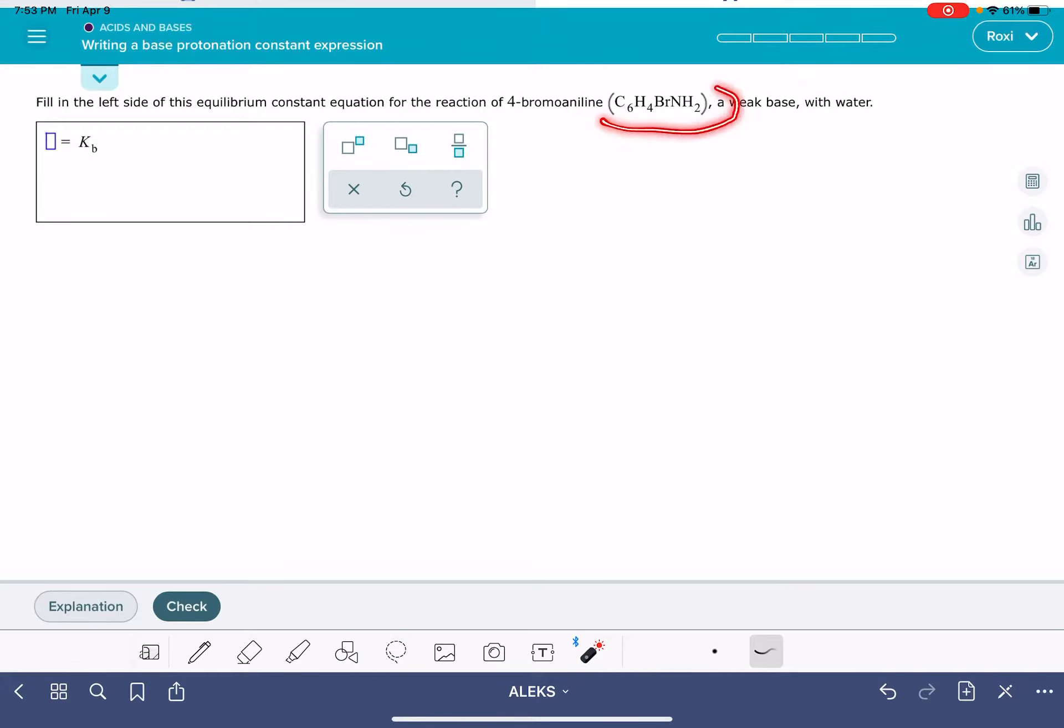In this problem, it'll give you the formula of a base, and it's asking you to write the Kb: products over reactants, raised to the stoichiometric coefficients. So to solve this problem,